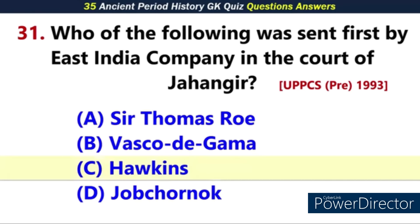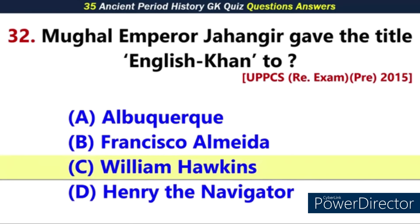Q32. Mughal Emperor Jahangir gave the title 'English Khan' to — Answer: C. William Hawkins.